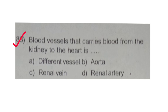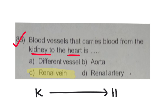Now, the blood vessels that carry blood from the kidney to the heart — what blood vessel carries blood from the kidney to the heart? The answer is option C: renal vein. Renal vein carries blood from the kidney to the heart.